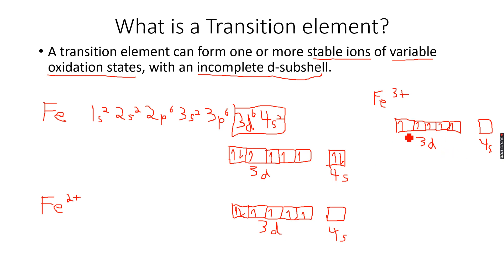If you notice, we again have a partially filled d subshell. We also have variable oxidation states—Fe2+ and Fe3+, two different oxidation states. This has an oxidation state of +2, this has +3, and they have an incomplete d subshell. Yes, Fe does fill the criteria for a transition element because it has formed one or more stable ions of variable oxidation states with an incomplete d subshell.